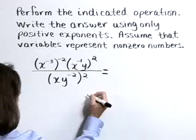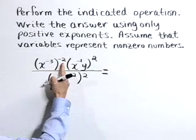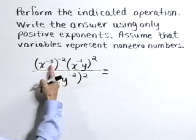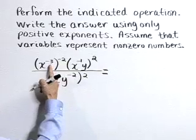Let's start simplifying by taking care of our outer exponents first. When we raise a power to a power, we multiply those exponents.